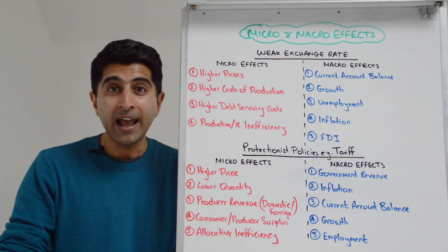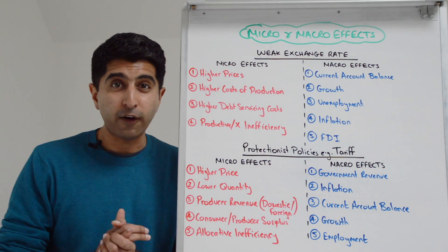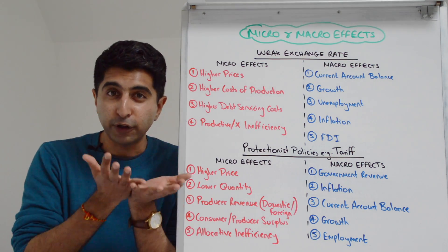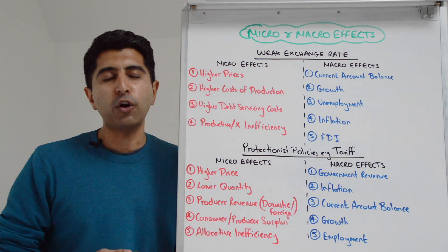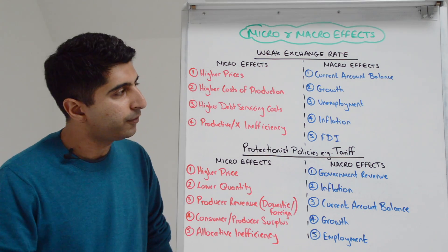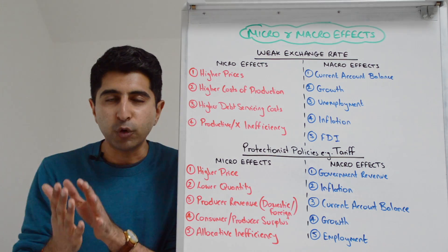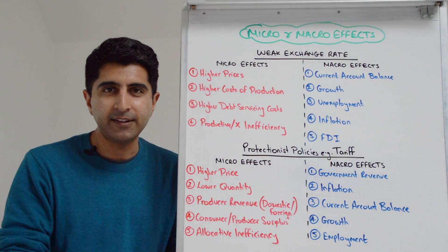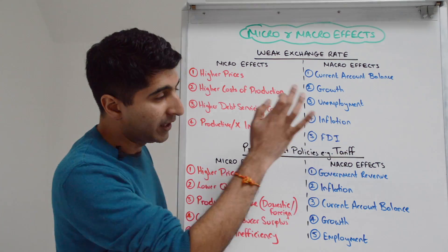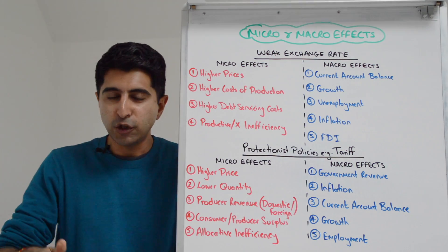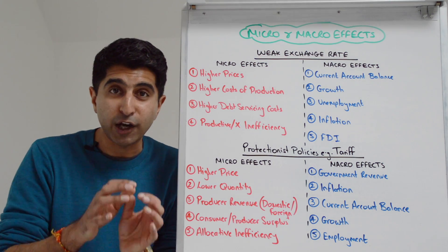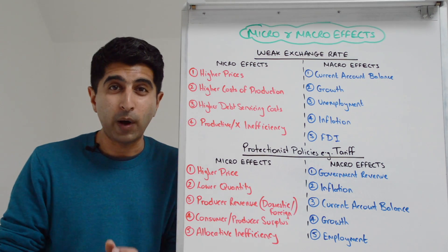On the inflationary side, maybe a better way to get there is from the SRAS chain of analysis. More expensive imports can drive up cost of production for firms who are importing their inputs, who then pass that on via higher prices — that is cost-push inflation. In fact, if that effect dominates, you might see lower growth and higher unemployment in the economy as well.